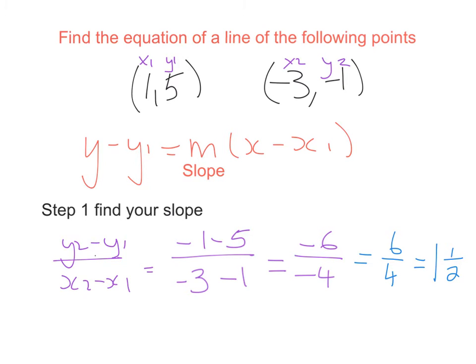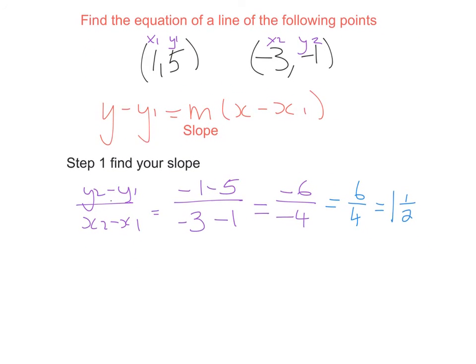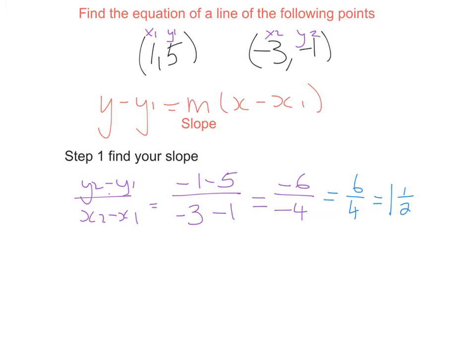Okay you can still write it as 6 over 4 and bring it on and there's no problem with that. So I'm now going to go back to my formula and I'm going to fill it in as I normally would. So I have y minus y1 so minus my y1 in this instance is 5 equals m and my m is my slope which I figured out here is 1 and a half, which is 1 and a half bracket x minus x1 which in this instance is 1.